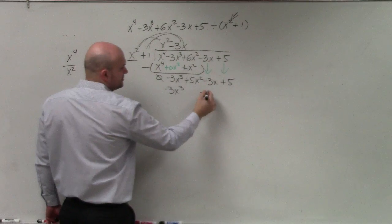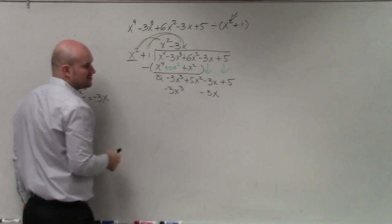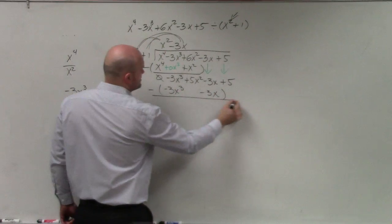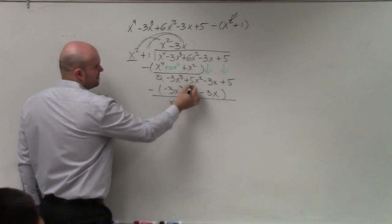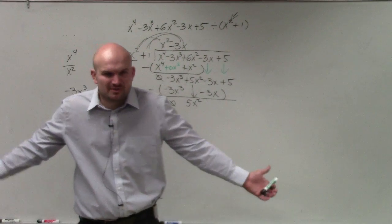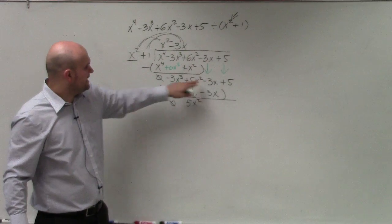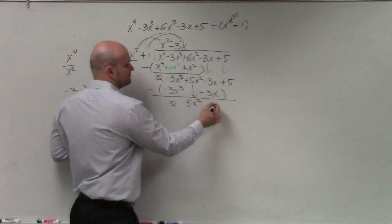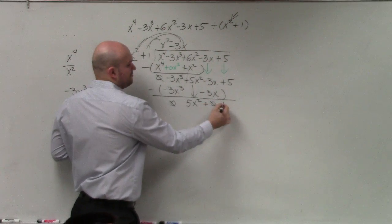Again, I'm going to label it under here because those are going to be like terms. And then I subtract. This gives me 0. I can bring this down. You could put a 0 there if you wanted to and subtract them. But subtracting 0 is really not doing anything, right? And then negative 3x minus a negative 3x is now going to give you 0. And then we have plus 5.